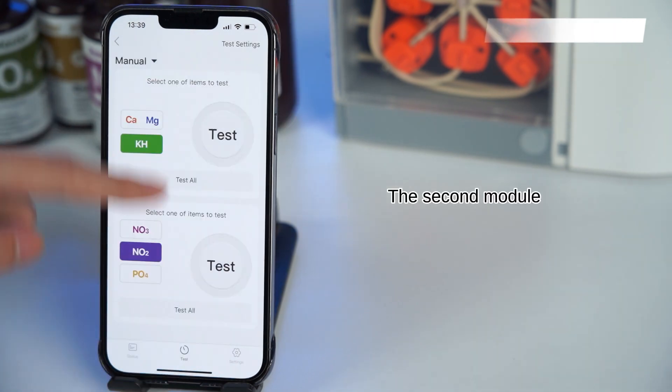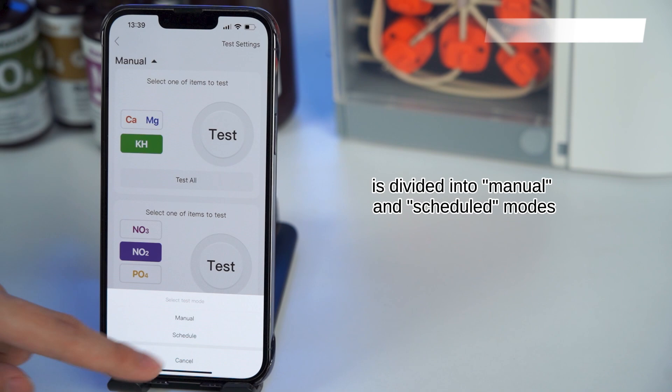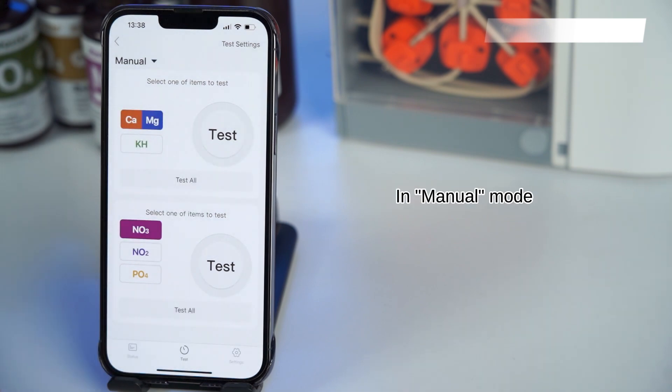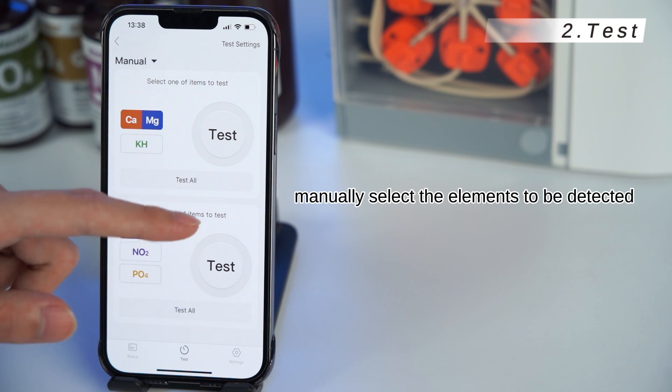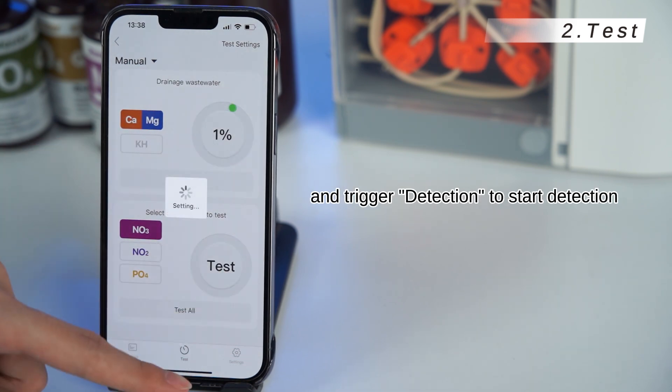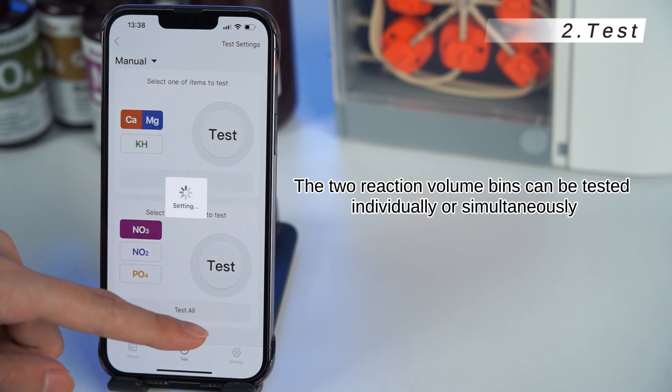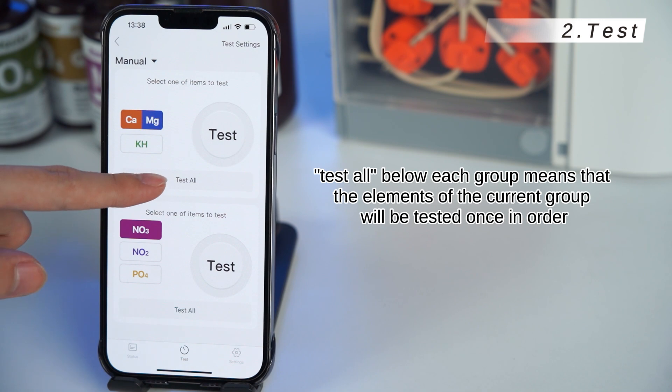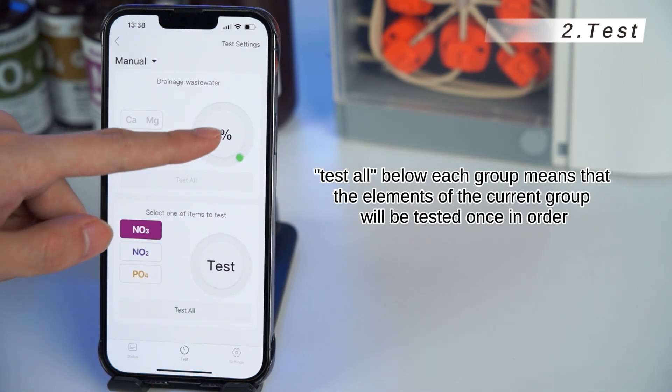Test. The second module, test, is divided into manual and scheduled modes. In manual mode, manually select the elements to be detected and trigger detection to start detection. The two reaction volume bins can be tested individually or simultaneously. Test all below each group means that the elements of the current group will be tested once in order.